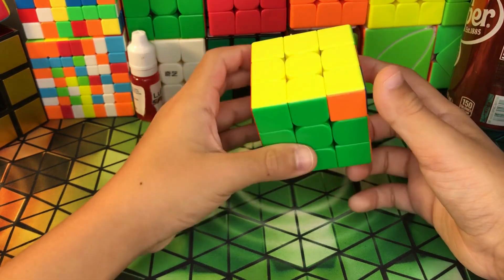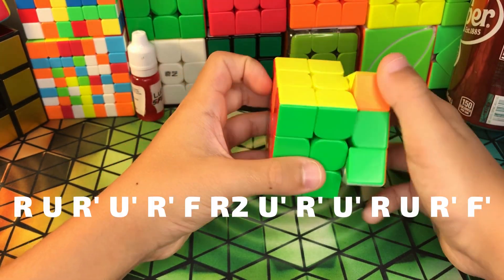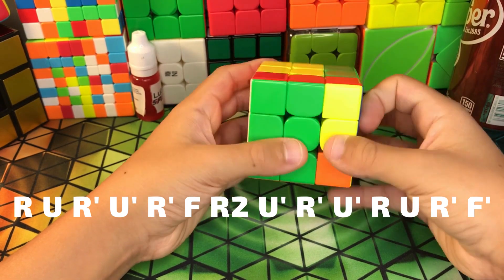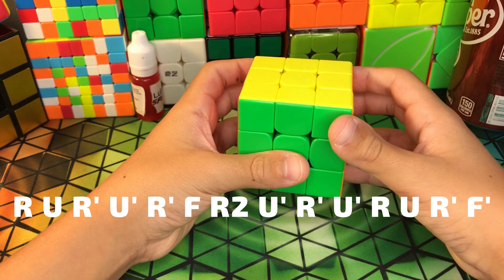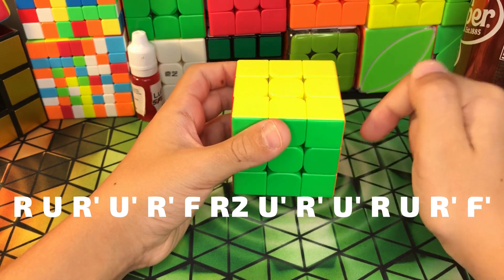Then you get an OL skip and have a T-perm, so just do the T-perm algorithm that is in one of my other videos called All the PLL Algorithms. I'll link it in the description.